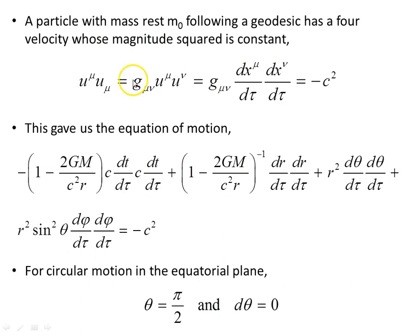If we take the magnitude and the square of it, we get this object, which we've seen in previous videos, equal to minus c squared. This gave us the equation of motion that we've seen in previous videos in this series on the Schwarzschild geodesics.